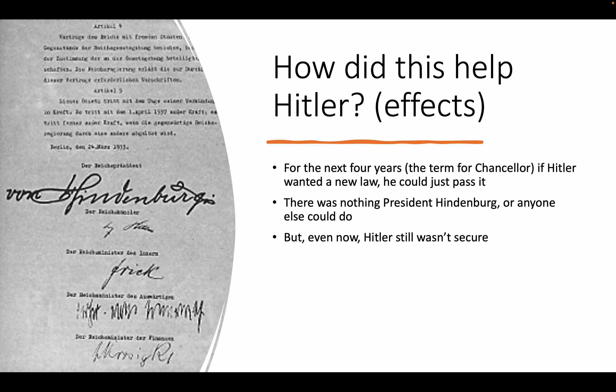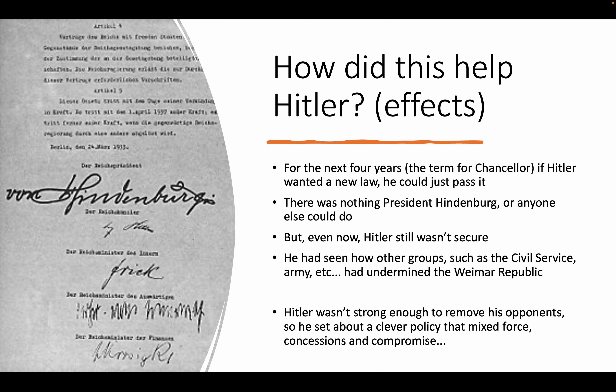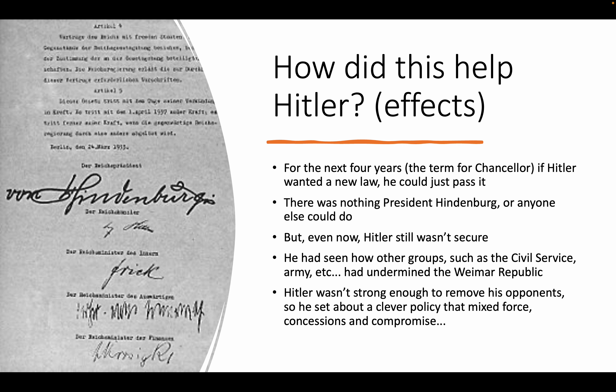Even now, Hitler still wasn't secure. He had seen how other groups, such as the Civil Service and the Army, had undermined the Weimar Republic — basically reducing how effective it was. So he saw how these military people were able to reduce the power of the Weimar Republic, and at the time, Hitler still wasn't strong enough to remove his opponents.